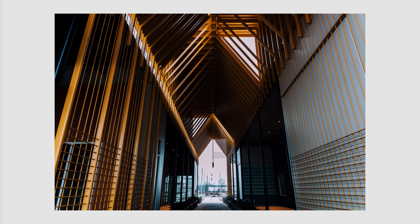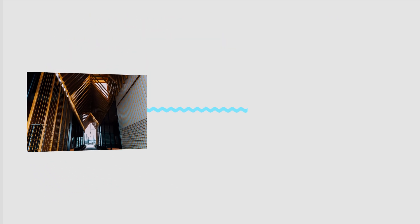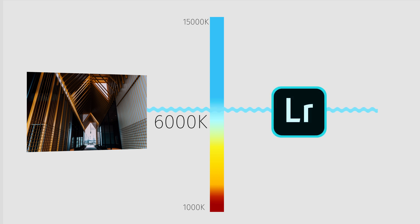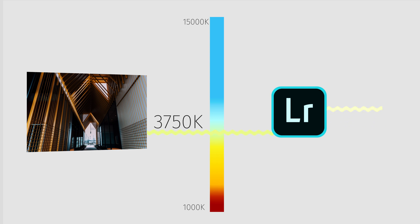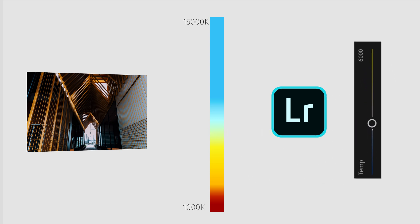Let's use this image I took earlier today to help illustrate. This photo was taken at about 10 in the morning on an overcast day. The color temperature of the light was about 6,000 degrees Kelvin, so the light coming into the camera was more blue in terms of the color spectrum. For my editing software to interpret that blue light as white, it has to counteract that blue with yellow, essentially shifting the image towards yellow. So the slider we see is actually showing the inverse of the actual color temperature — the opposing shift needed to make the incoming color appear white.